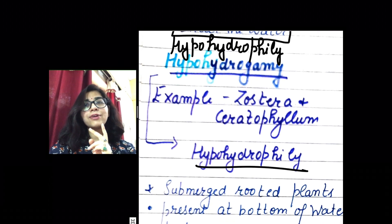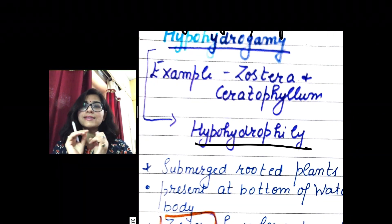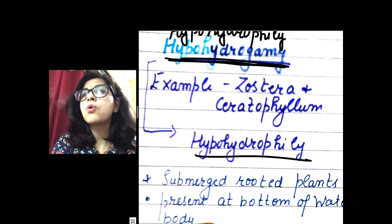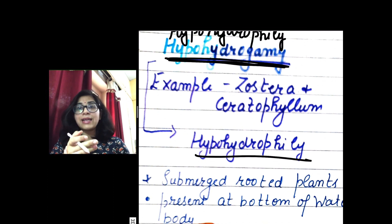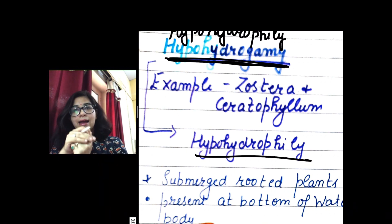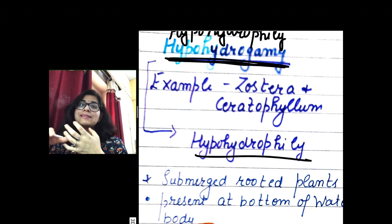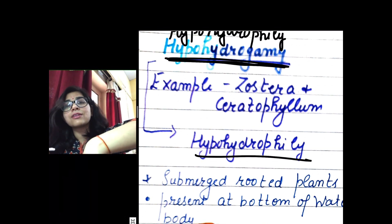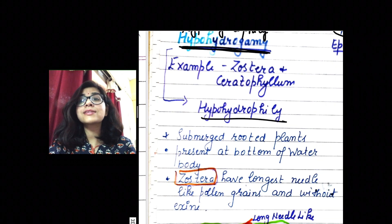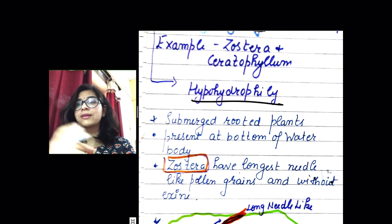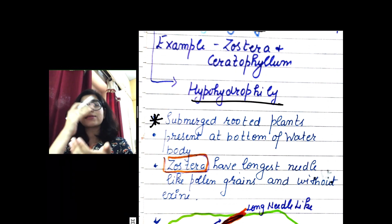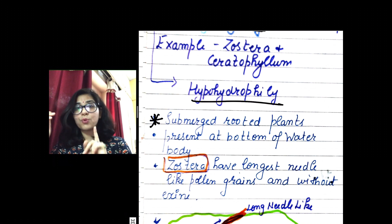Two very important examples given in the NCERT are Zostera and Ceratophyllum. The first type — hypo hydrophily — involves these two plants. Since this pollination takes place under the water, Zostera and Ceratophyllum are submerged plants. The first characteristic: they are submerged rooted plants.